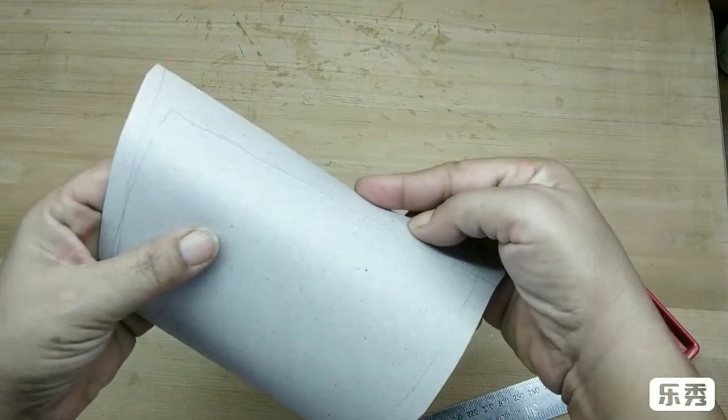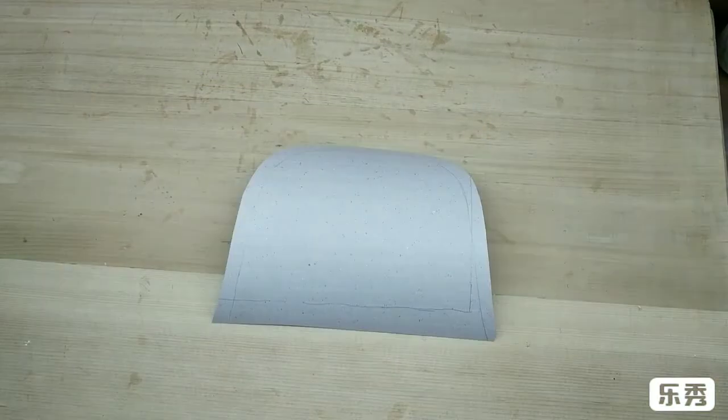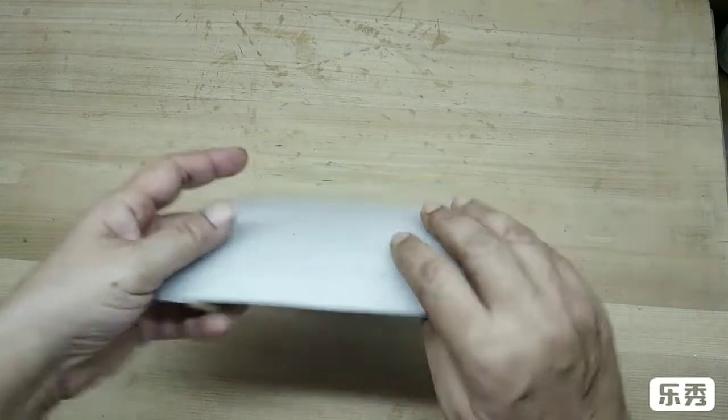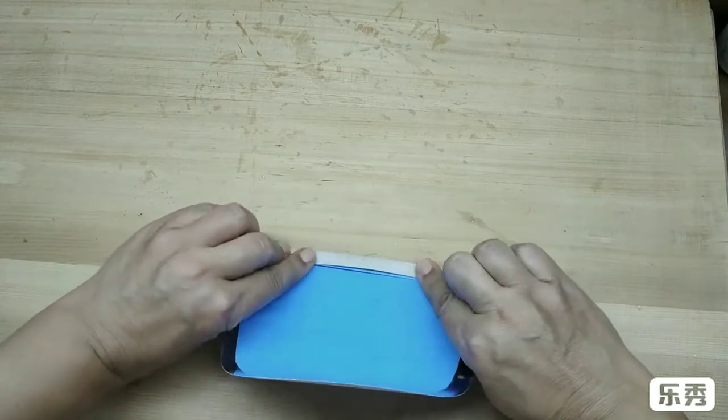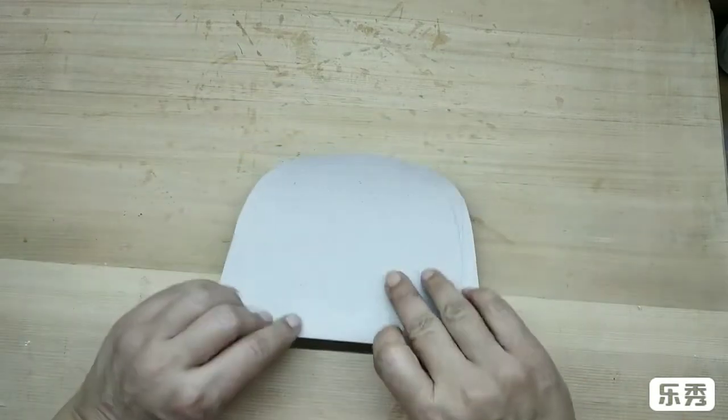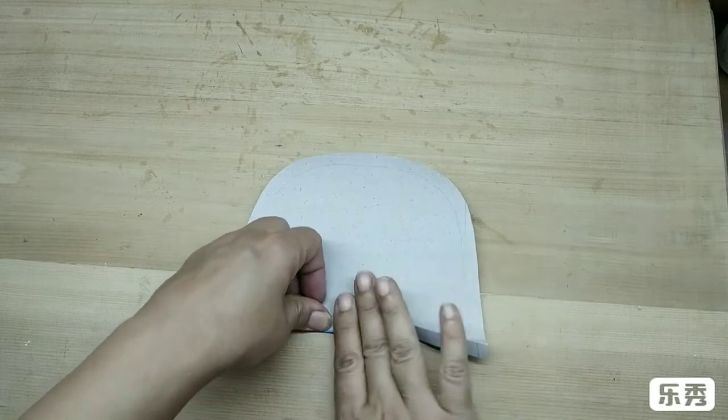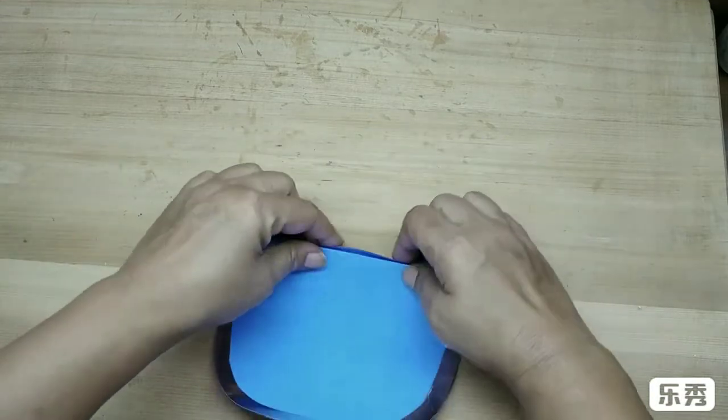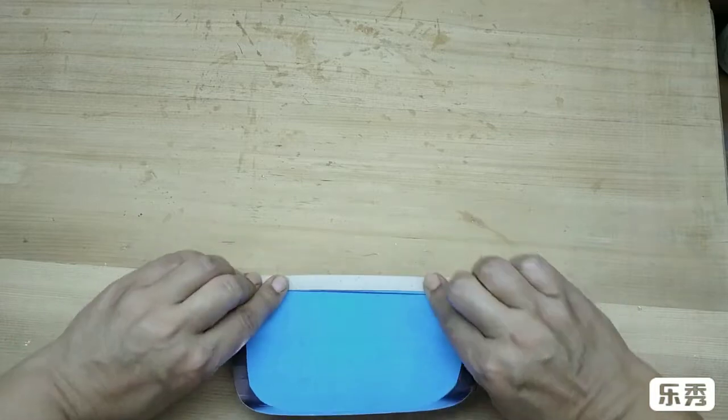And now, if you can make out, I've scored the entire paper. What scoring does is basically help make the folds very neatly. Since it's thick paper, it'll be easier to fold on those score lines. So just give these folds accordion style.